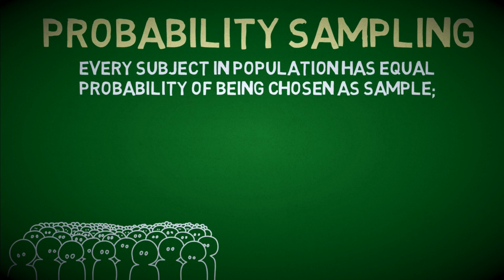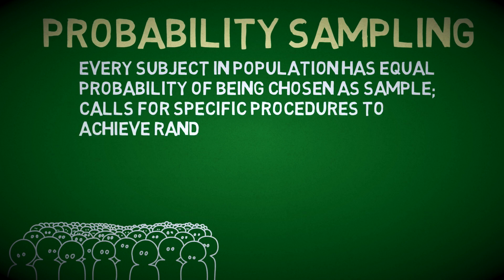To achieve equal probability or to achieve this randomness, probability sampling would call for some kind of procedure in order to generate this randomness. In other words, if one wants to do a random sampling procedure, one actually cannot do it just randomly. One would actually need to do it carefully and strictly in order to achieve randomness.